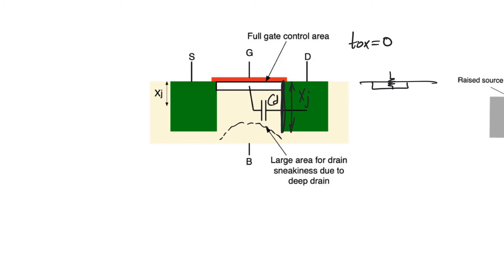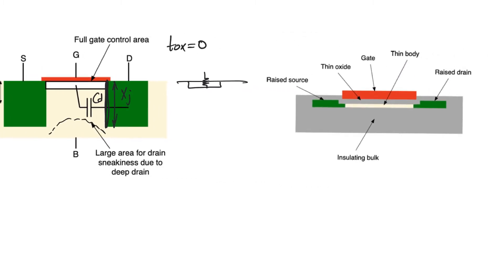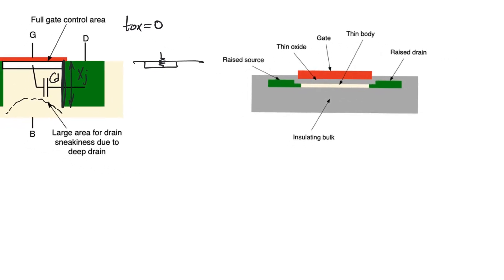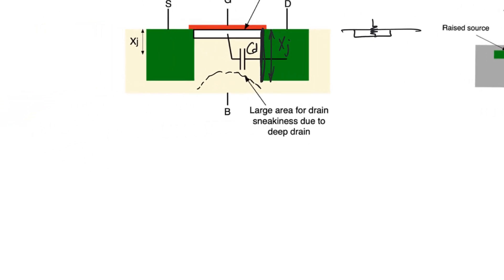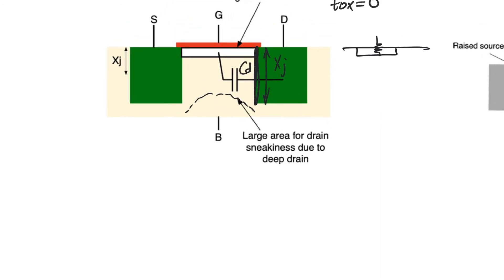So what's the actual solution to drain induced barrier lowering? Like what if we really wanted to get rid of it completely? The real solution to drain induced barrier lowering is the buried gate approach. The buried gate approach would create a second gate and this second gate would exist buried in the body and just below the channel.